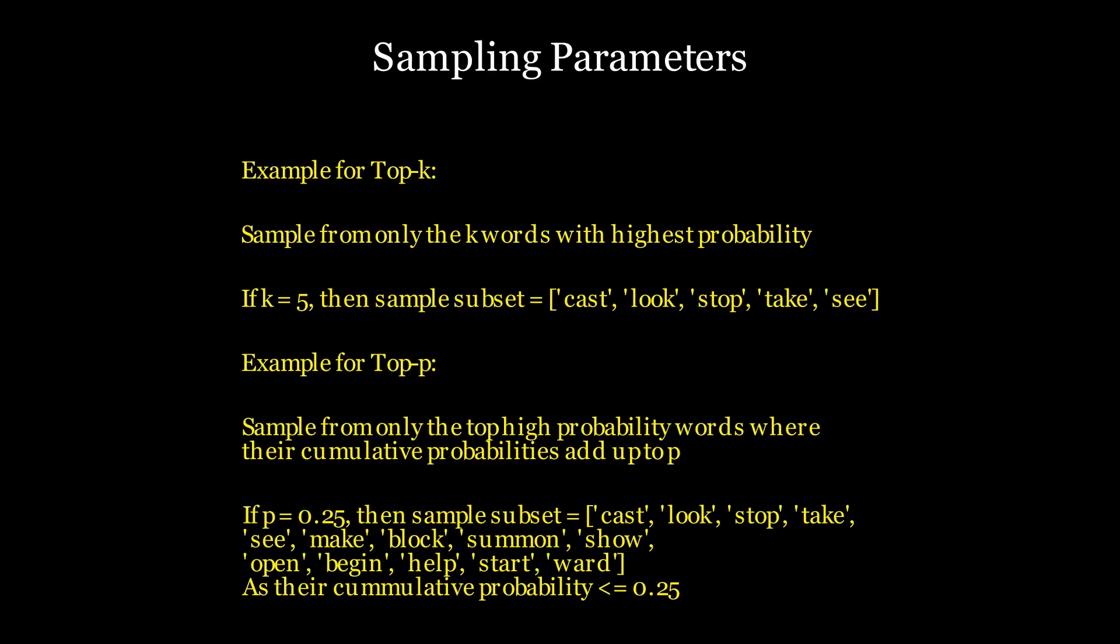Top-p, on the other hand, which is also known as nucleus sampling, works a bit differently. Instead of selecting a fixed number of tokens like in top-k, it chooses tokens such that the cumulative probability of the selected tokens sums up to p.